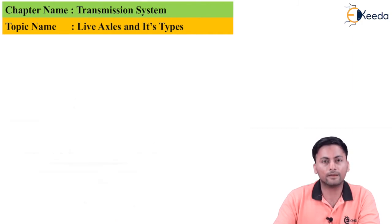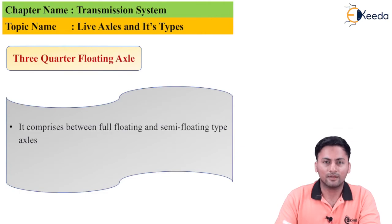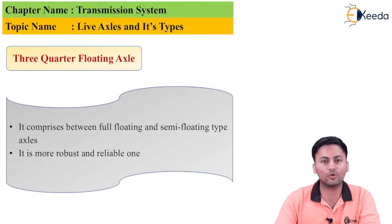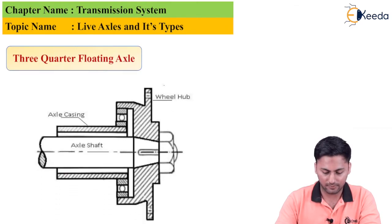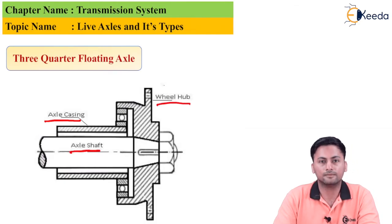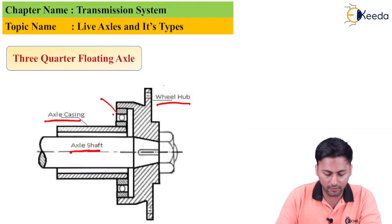The last type is the three-quarter floating axle. It comprises a compromise between both the semi-floating and full floating types, combining the advantages of both. In terms of performance, it is more robust and reliable. Its construction includes an axle casing, axle shaft, and wheel hub, and is simpler in construction compared to the full floating axle.